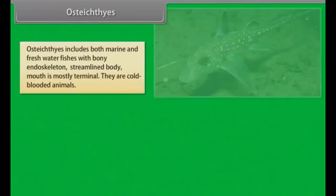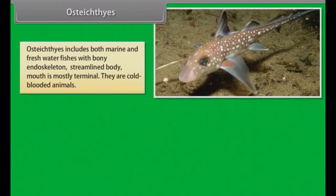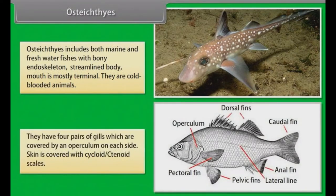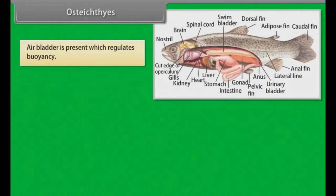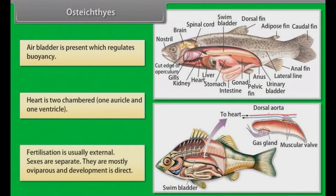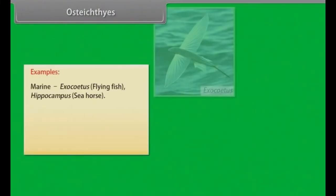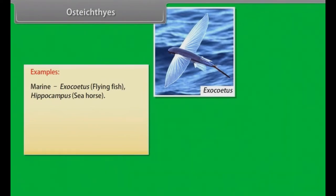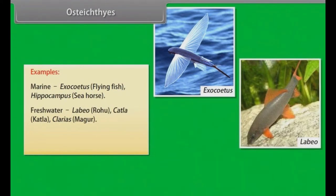Osteichthyes includes both marine and freshwater fishes with bony endoskeleton and a streamlined body. Mouth is mostly terminal. They are cold-blooded animals. They have four pairs of gills covered by an operculum on each side. Skin is covered with cycloid or ctenoid scales. Air bladder is present, which regulates buoyancy. Heart is two-chambered — one auricle and one ventricle. Fertilization is usually external. Sexes are separate. They are mostly oviparous and development is direct.